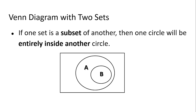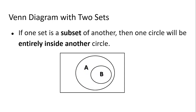Now let's look at the concept of subset. A subset is a set that is contained within a superset. The outer circle is the superset, while the inner circle is the subset. For example, if set A represents all students studying in Karnataka, and set B represents only those students studying in our college, then students in our college are also students, but they are a subset of all undergraduates studying in Karnataka.